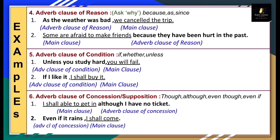Sixth type: adverb clause of concession or supposition. It is denoted by subordinators: though, although, even though, even if. Example: 'I shall be able to get in, although I have no ticket.' 'I shall be able to get in' is your main clause. 'Although I have no ticket' is your adverb clause of concession. Another example: 'Even if it rains, I shall come.' 'Even if it rains' is your adverb clause of concession and 'I shall come' is your main clause.